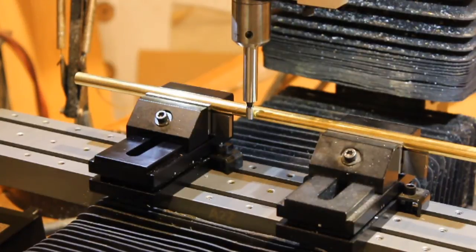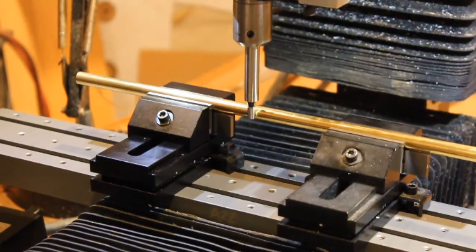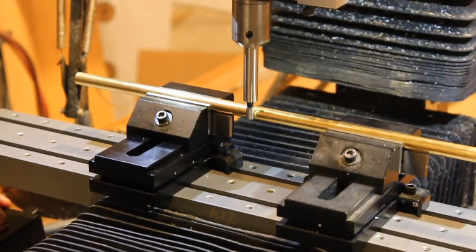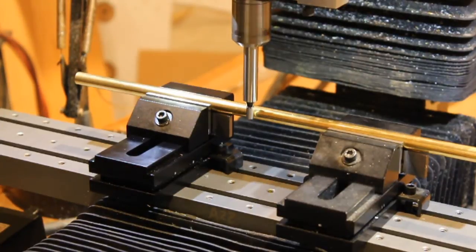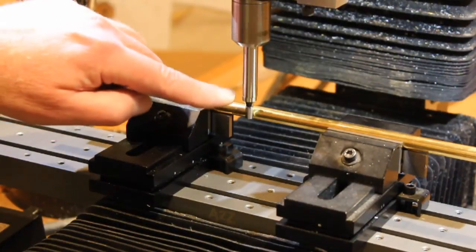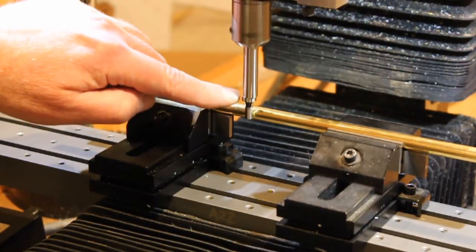now I've removed the indicator and I've replaced it with an edge finder. I'm sure you know how these work. Spindle going at a very low speed. I'm now going to jog the Y axis in a positive direction. And we just hit.